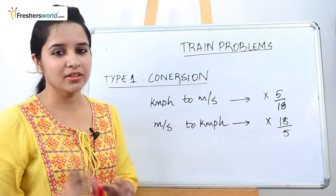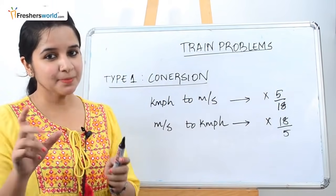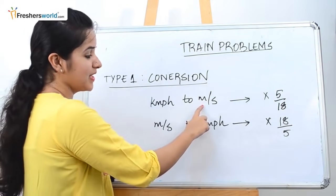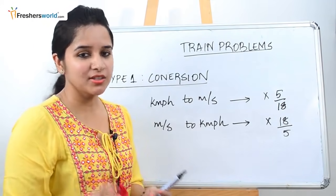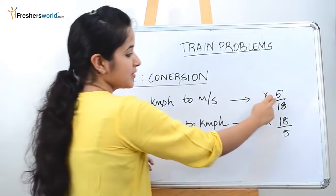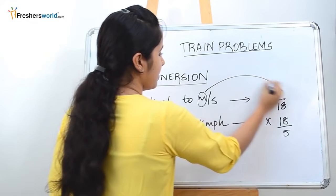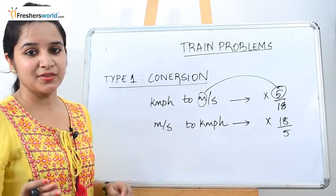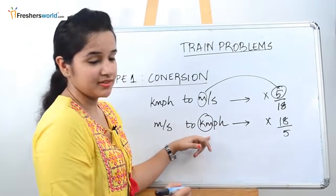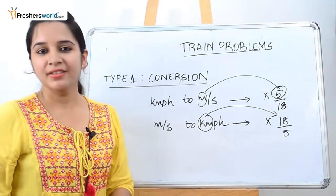People get confused by 5/18 and 18/5. There is a simple way to remember: if your answer has to be in meters per second — meter is the smallest unit compared to kilometer — so always remember if it is meters, the smallest number 5 will be in your numerator, giving 5/18. Kilometer is the highest form compared to meter, so when your answer is in kilometers, you use the highest numerator: 18/5. Simple to remember, right?